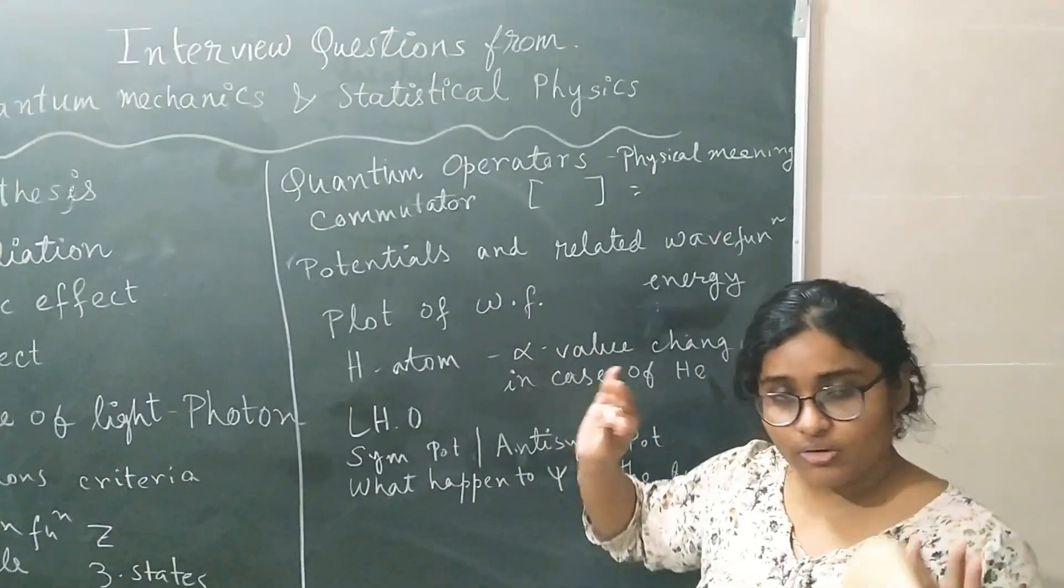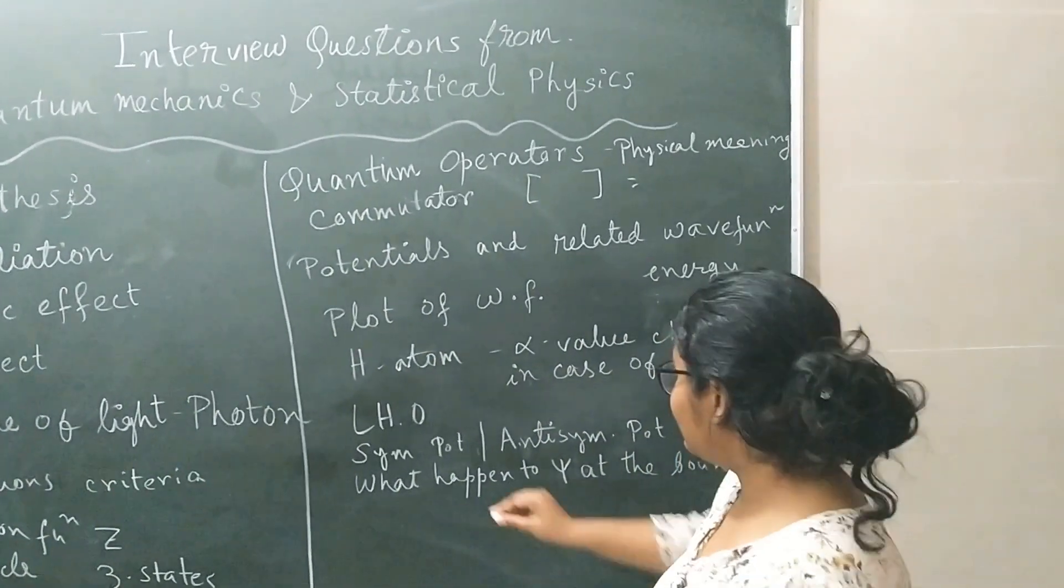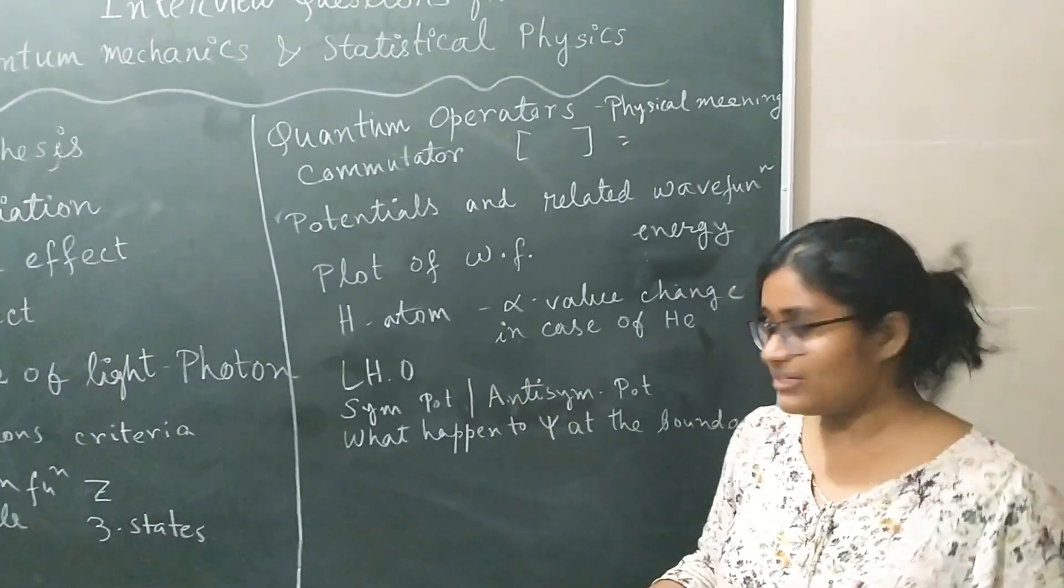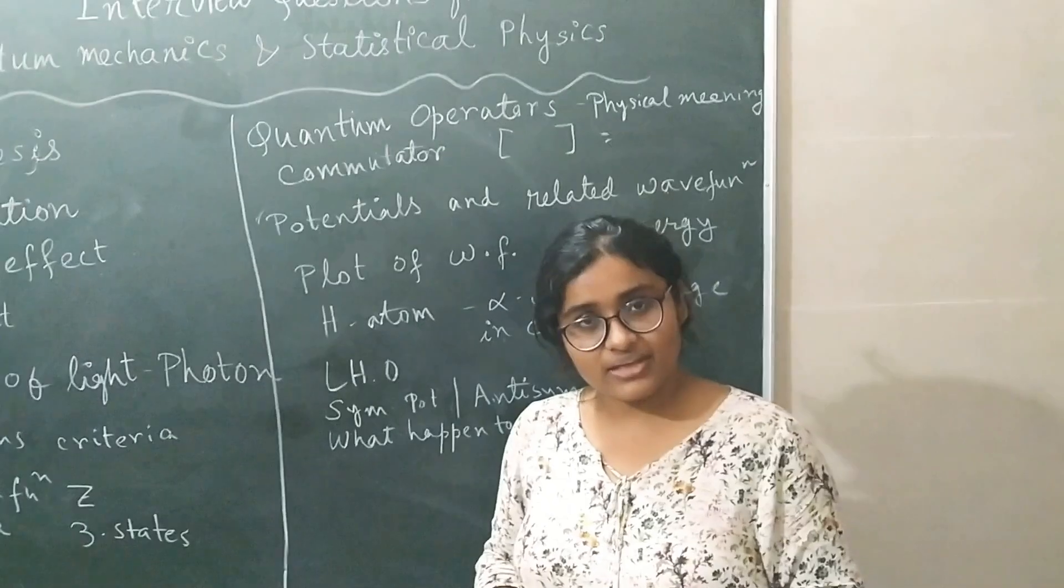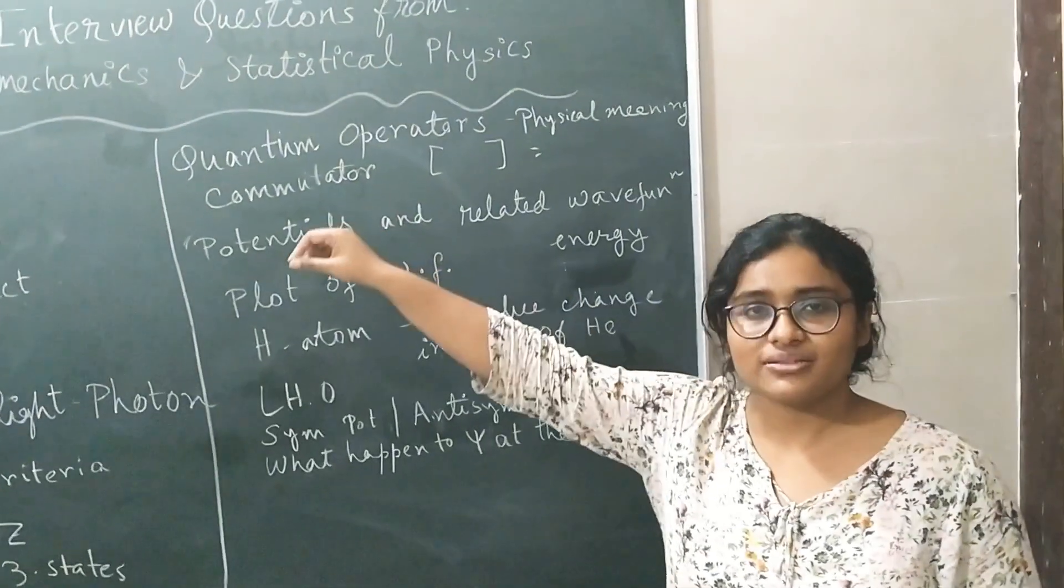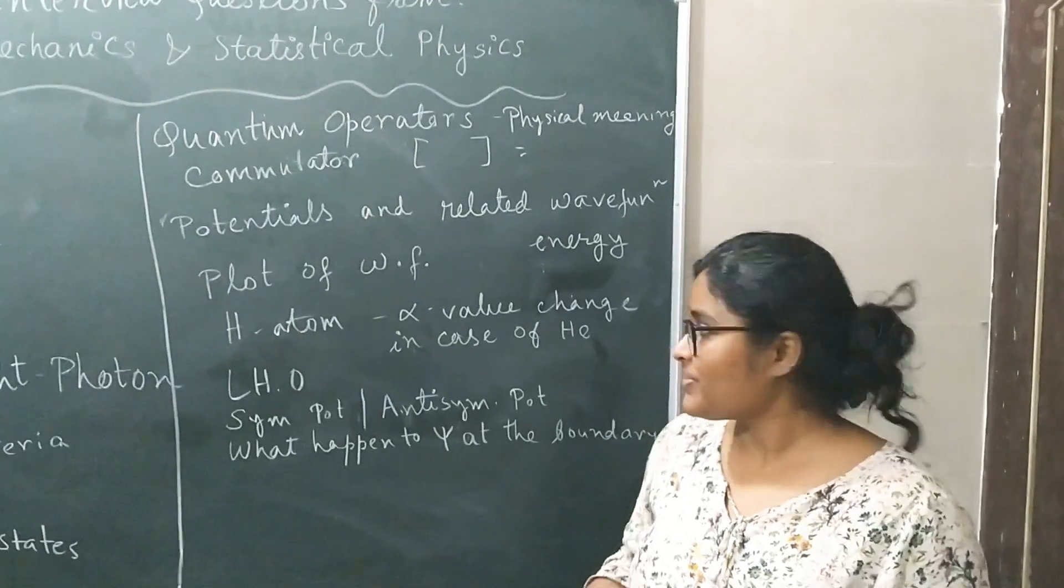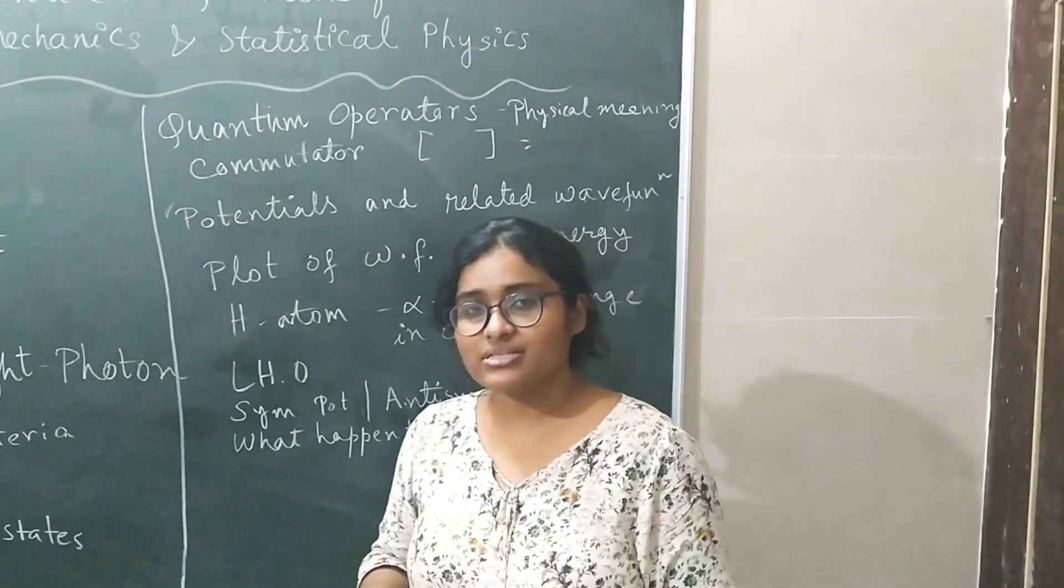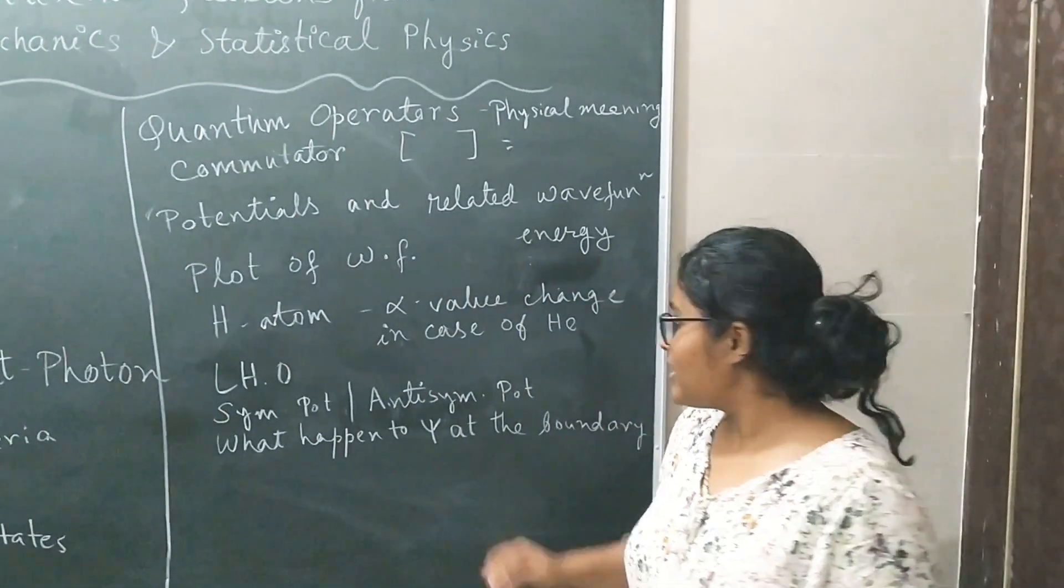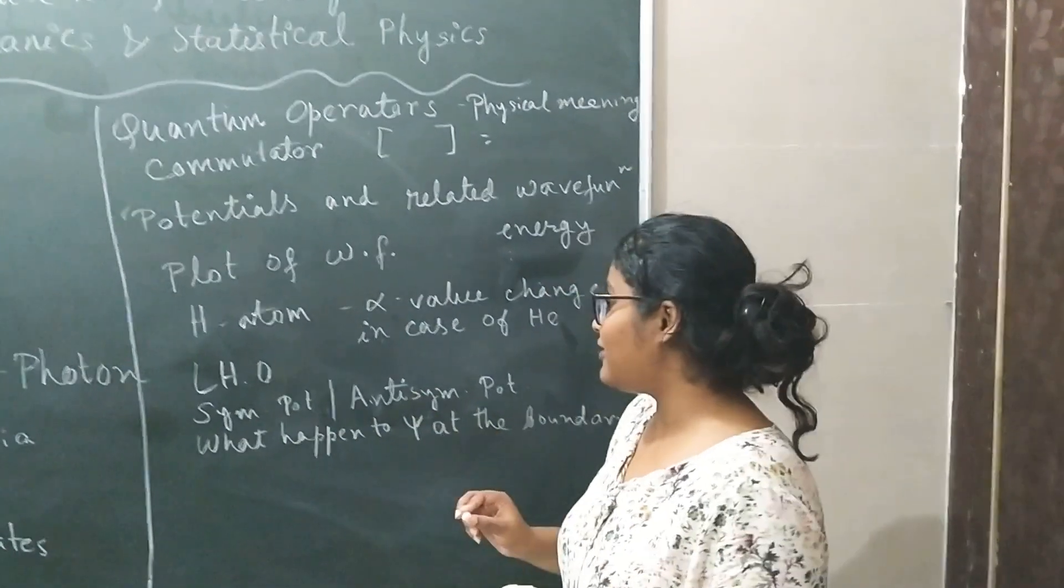They will always ask questions from potentials and related wave functions like, the plotting of symmetric wave potential, anti-symmetric potential, linear harmonic oscillator, half harmonic oscillator. They can tell you, they can ask you, plot symmetric potential and write out, plot the wave function of, for the ground state and write out its energy eigenvalues. And they can ask you that, half harmonic oscillator, plot the wave function, what will happen at the boundary? Anti-symmetric potential also, they can ask you the wave function, ground state wave function is related eigenvalues.